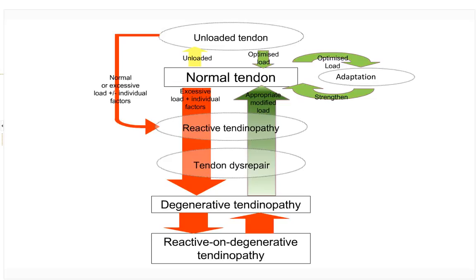This is normal tendon. If you put some load on that tendon, you get an adaptation and it's stronger — this is where we want to sit. As human beings we want to slowly load our tissues, get stronger, adapt. Use it or lose it — keep them loaded.